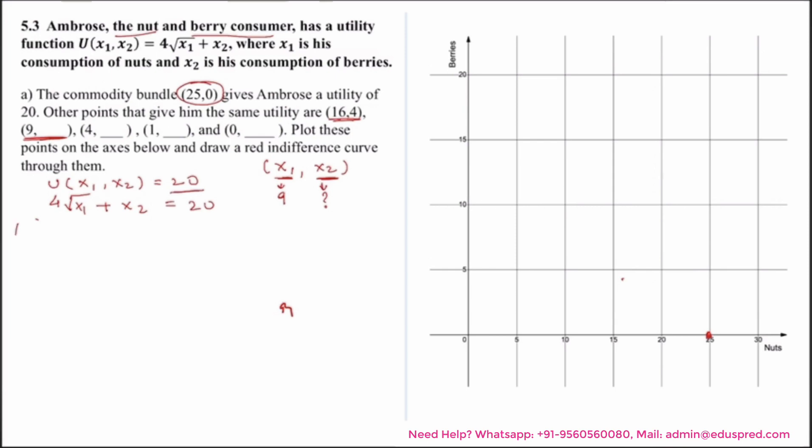At the consumption bundle (9, x2), what we have is 4 times square root of 9, as x1 is taking the value of 9, and we want the utility to be 20. Plus x2 is equal to 20. See, sometimes the questions are very simple. Here even if you don't know any microeconomic concept, this is just plain math. There is a function given to us, there is a functional value given to us, and we are given different values of the variables of the function.